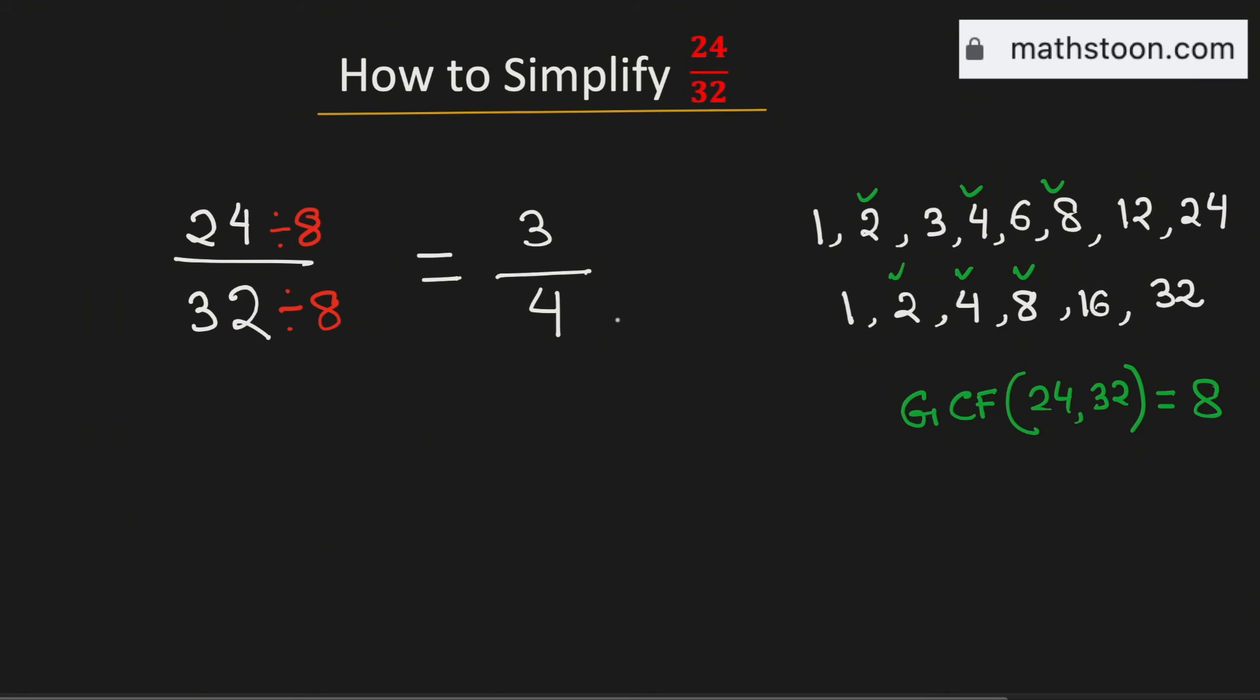As 3 by 4 cannot be simplified further, so 3 by 4 is the simplified reduced form of the fraction 24 divided by 32.